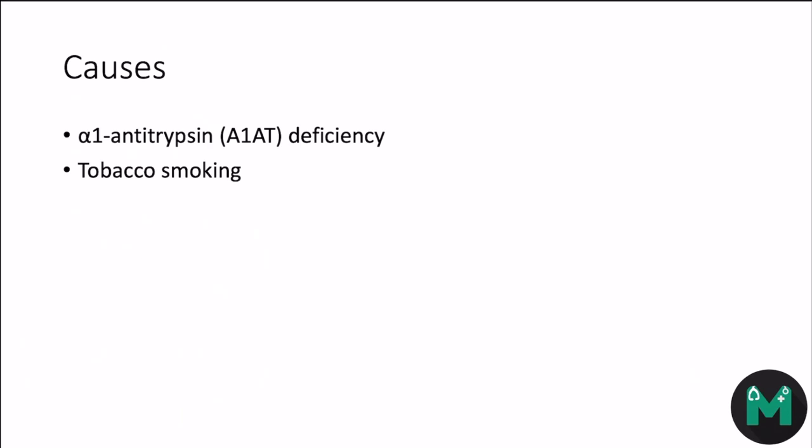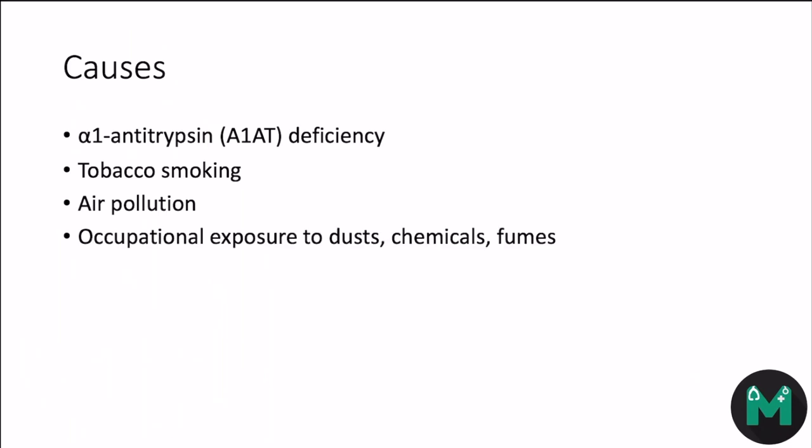Similarly, things like pollutants, dust, chemicals, and fumes increase the risk. In your social history, you really want to be asking about occupation, where they live, if it's close to a motorway, any hazards, working in factories, indoor biomass fuel burning, and also low socioeconomic status is a risk factor as well.